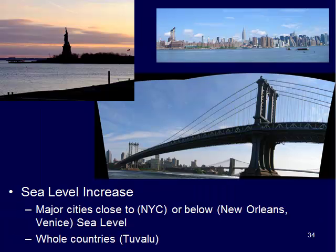Another hazard is sea level change. A lot of major cities are very close to sea level — you can see the New York City skyline, the Statue of Liberty, and the Brooklyn Bridge, all within feet of the ocean surface. If sea level rose a foot or two, many of these places would be flooded. New York City, New Orleans, Venice, and whole countries in the Pacific would be affected. Tuvalu is an island nation having major problems, especially at high tide when water floods many residents' homes, raising the serious question: what are we going to do when our whole nation is underwater?